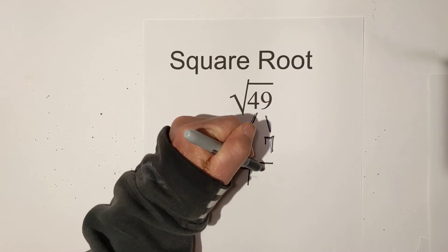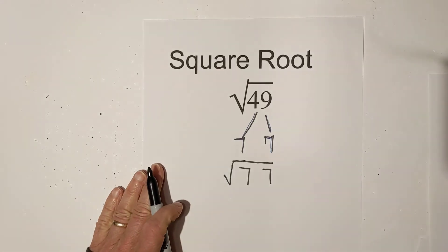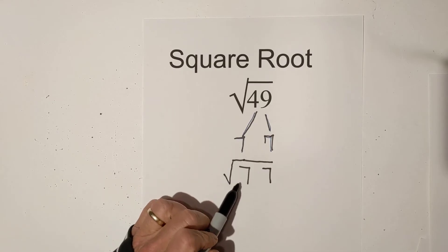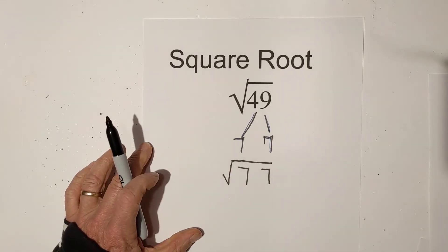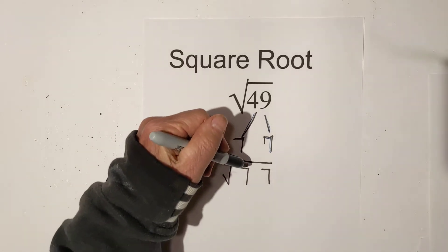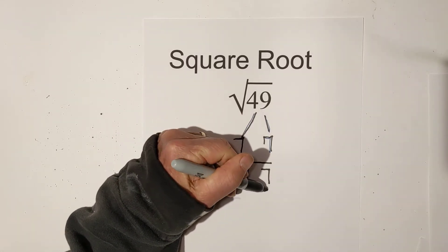So we have 7 and 7. And then you can take numbers out from under the square root sign if you have pairs. And so since we have two 7s, we can take out this pair of 7s.